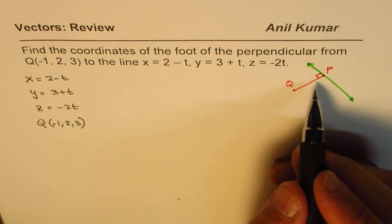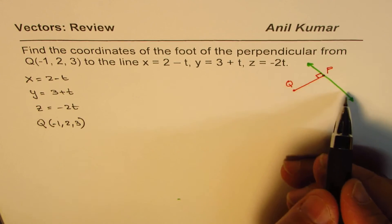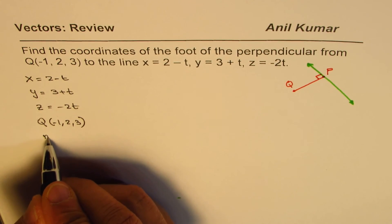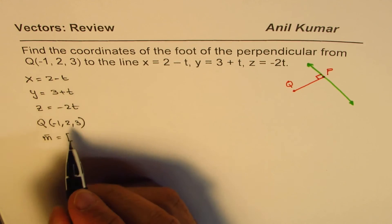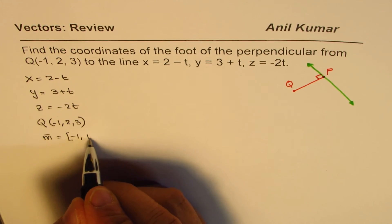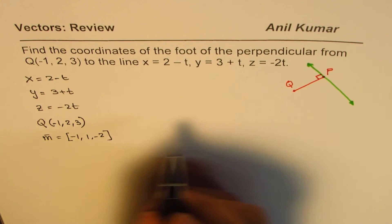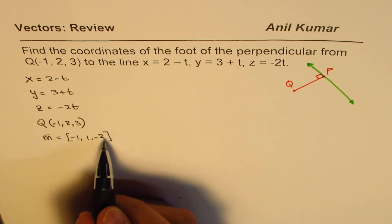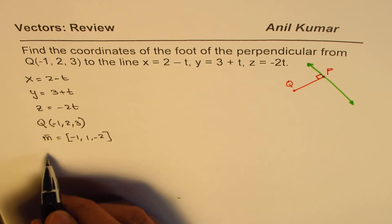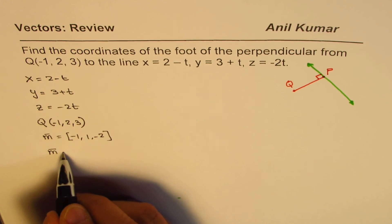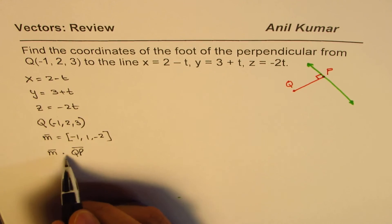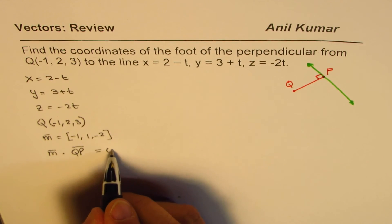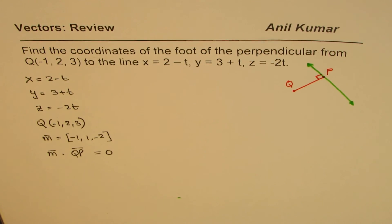Now, we know the dot product of direction of this line. What is the direction of this line? Direction for this line is (-1, 1, -2). So that becomes the direction of this line. Now, this direction of this line, m, dot QP, or we could write PQ, equals to 0. So that is how we are going to solve this particular question. That's the concept.